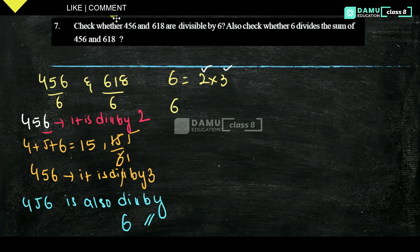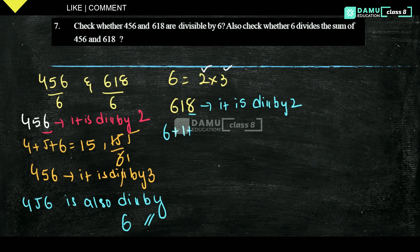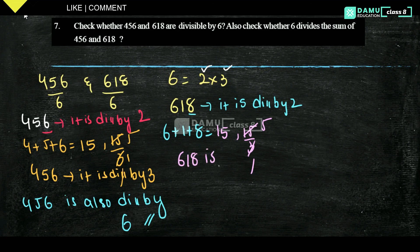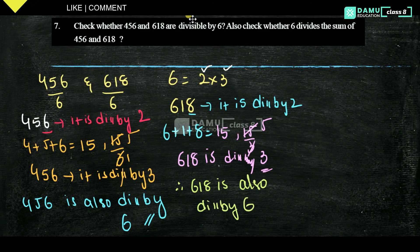Next, take 618. The unit digit is 8, which is even, so it is divisible by 2. Then 6 plus 1 plus 8: 7 plus 8 equals 15. Then 15 divided by 3 — 3 fives are 15 — so 618 is divisible by 3. Therefore, 618 is also divisible by 6.